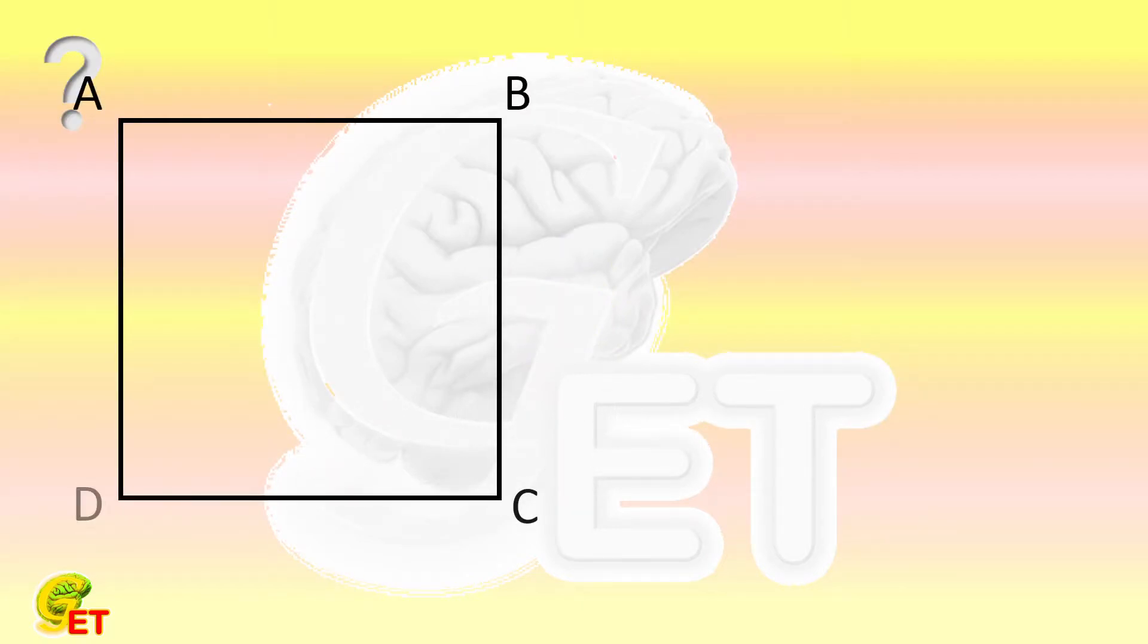The side length of the square ABCD is S. There is a point K inside the square, and it is exactly on the arc, whose center is A and whose radius is AB.